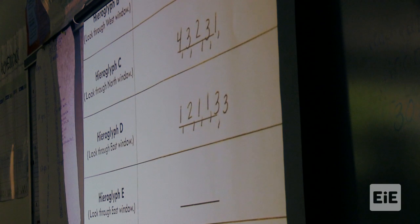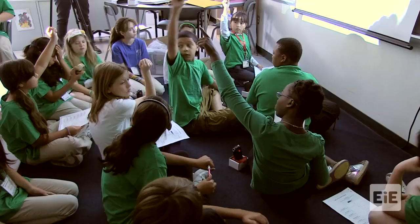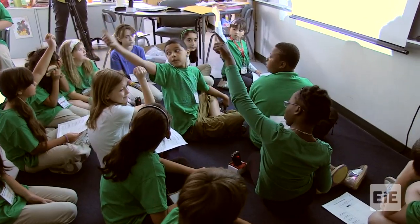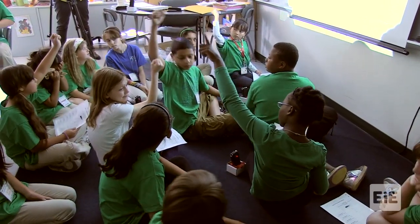Jessica expected her students to have consistent results, but these numbers are all over the map. Usually when there's this much variation in the data, it's because students used inconsistent testing methods or because they didn't understand the scoring system. In this case, that turns out to be what happened.